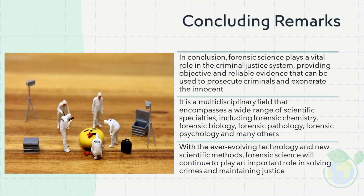In conclusion, forensic science plays a vital role in the criminal justice system, providing objective and reliable evidence that can be used to prosecute criminals and exonerate the innocent. It is a multidisciplinary field that encompasses a wide range of scientific specialties, including forensic chemistry, forensic biology, forensic pathology, forensic psychology, and many others. With the ever-evolving technology and new scientific methods, forensic science will continue to play an important role in solving crimes and maintaining justice.